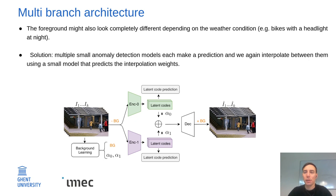The different branches can specialize in different weather conditions, and by selectively activating certain branches, we can deal with different weather conditions. Importantly, we learn all of this completely unsupervised from data — there is no constraint on what a specific branch should do. It's completely up to the model to decide what a branch should focus on.